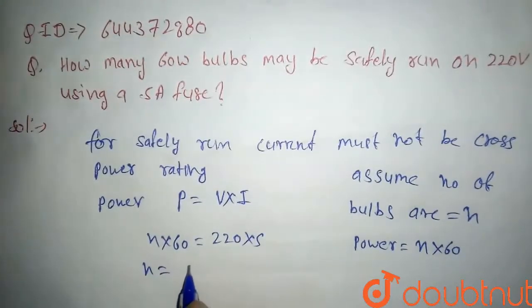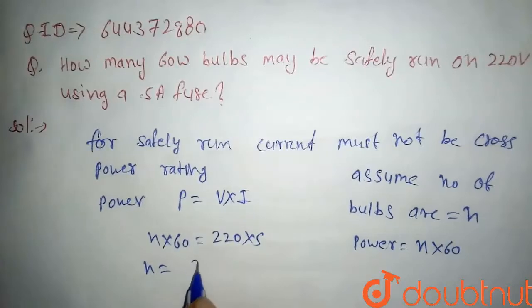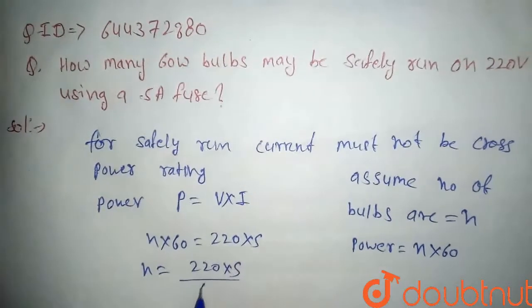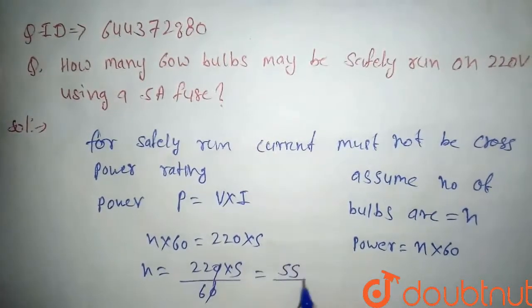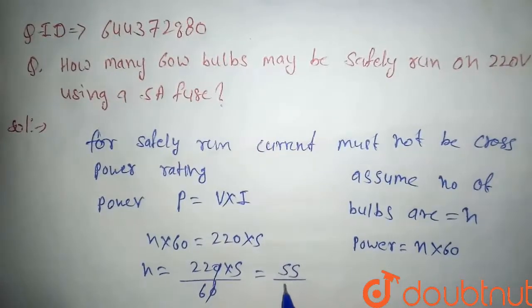our number of bulbs comes out to 55 divided by 3, which will be 18.33.